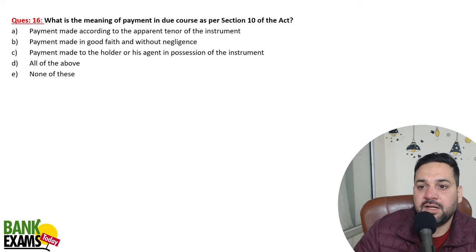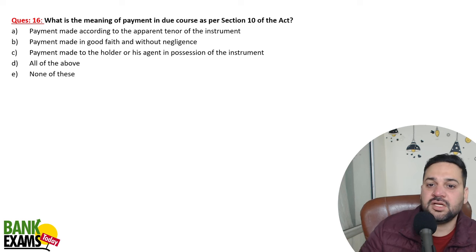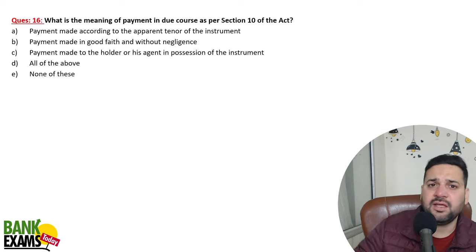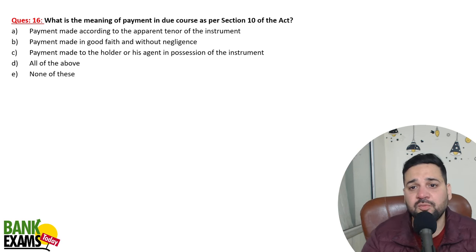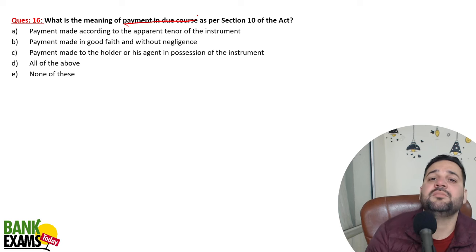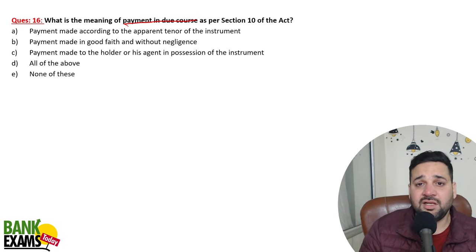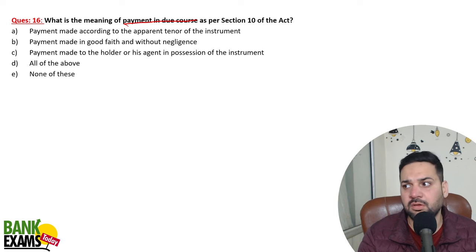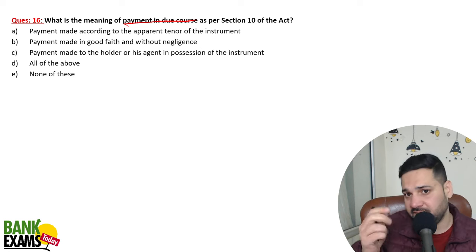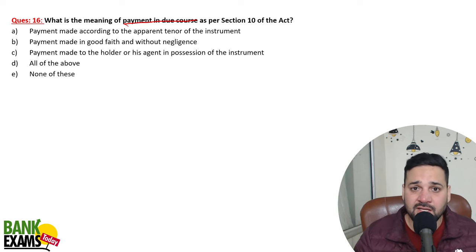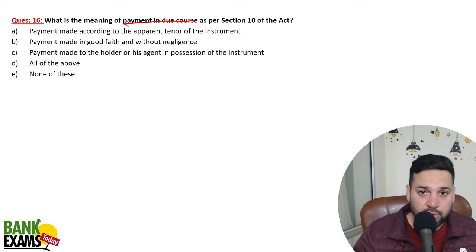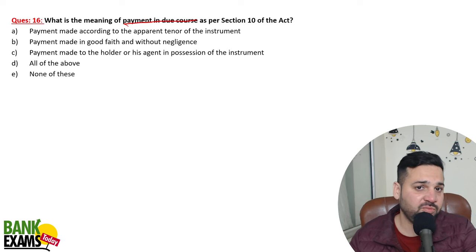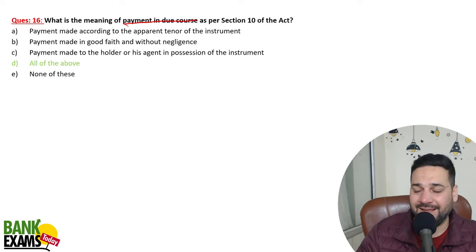What is the meaning of payment in due course? Payment made according to the apparent tenor of the instrument, in good faith, without negligence, made to the holder who has possession of the instrument. For example, a person presents a bearer cheque at the bank — the cheque is clean, original, signatures match, there is no mutilation or manipulation, the date is correct — the bank makes payment. That is payment in due course, and the bank cannot be held liable in such a case.